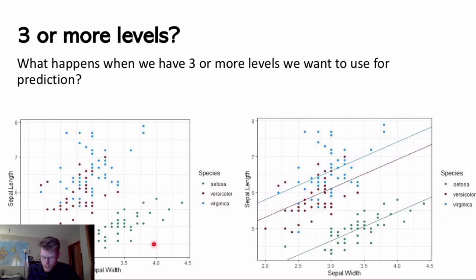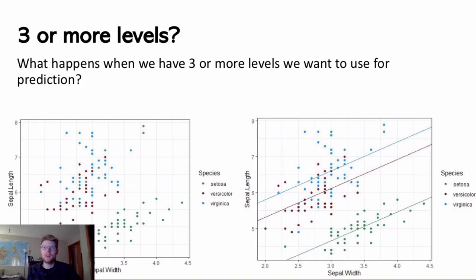If we color code by species, we have different clusters in the scatter plot — one area per species, with a little overlap. If we keep track of species as a predictor, we'll make a much better prediction. If I ignore the color coding and just try to fit sepal width as a predictor for sepal length, I won't get an accurate best fit line. But if I make different best fit lines for each species, I'll have a much more accurate model.